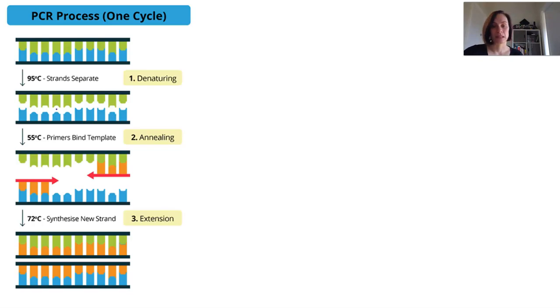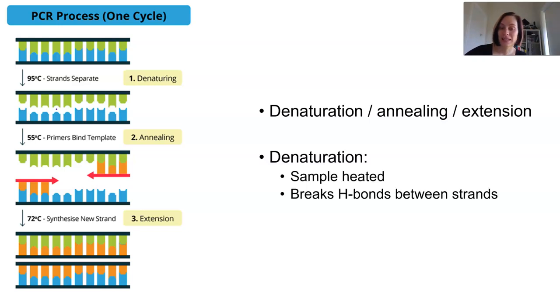There are three main steps in the process of PCR: denaturation, annealing, and extension. And denaturation is exactly as it sounds. First, the DNA sample is denatured. By heating it up to about 95 degrees, it breaks the hydrogen bonds holding together each strand of the DNA.